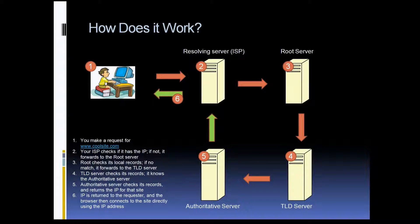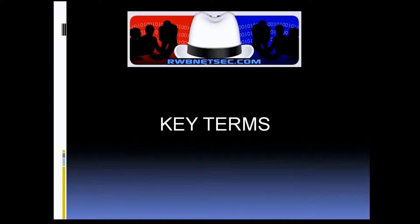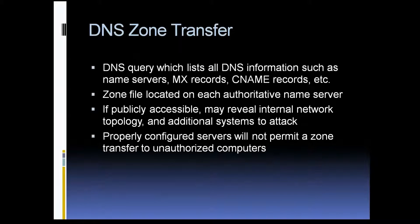Now let's take a look at some of the terms we'll come across when working with the tools in Kali. The first one is the zone transfer. Basically, all of the name servers contain a zone file, which is just a text file that contains all the information for the particular domain — the name servers, the MX records for mail, CNAME records which are aliases, A records, etc. When you do a request for a zone transfer, you're actually asking that server for a copy of its zone database.